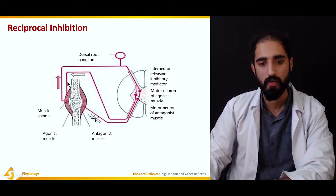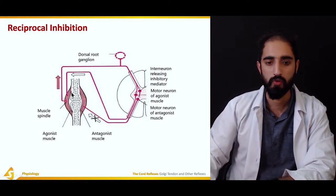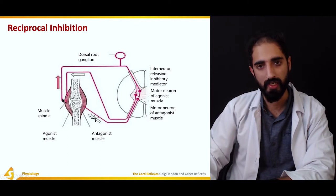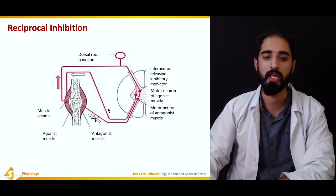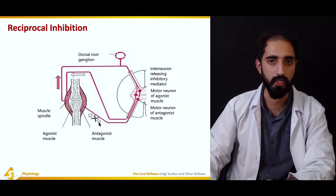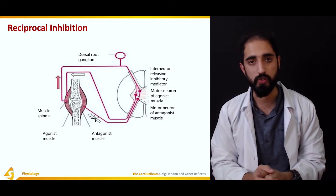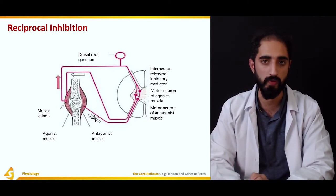Reciprocal inhibition, on the other hand, is associated with the muscle spindle. When an agonist muscle is stretched, the muscle spindle is lengthened and activated, sending information to the spinal cord where the motor neuron for the antagonistic muscle is inhibited, resulting in relaxation of the opposite muscle — this is reciprocal inhibition. This concept of autogenic and reciprocal inhibition is also used in management of muscular dysfunctions using muscle energy techniques such as post-isometric relaxation and post-facilitation stretch techniques.